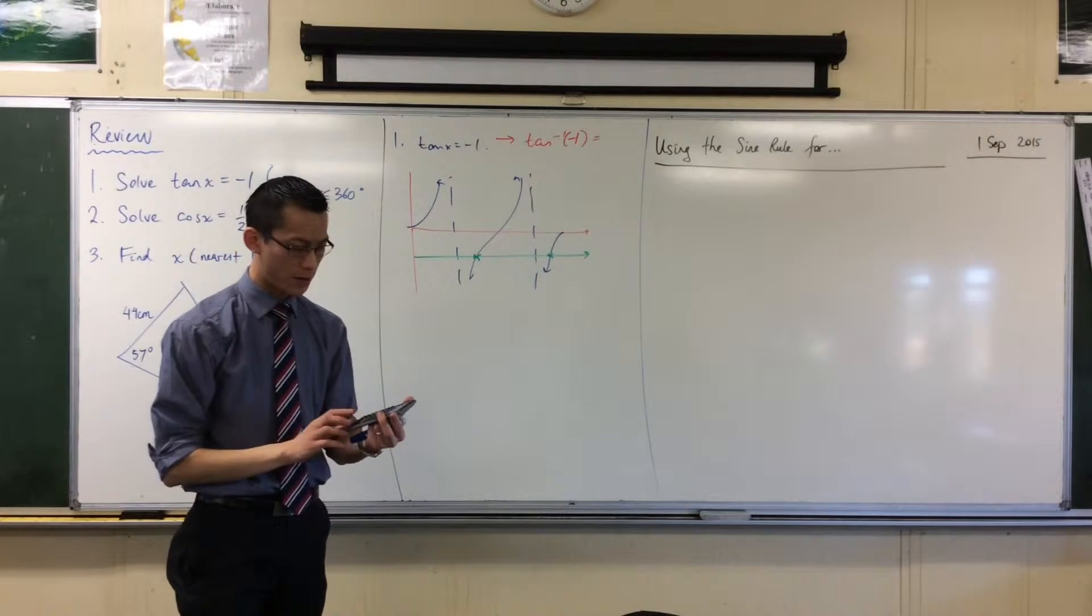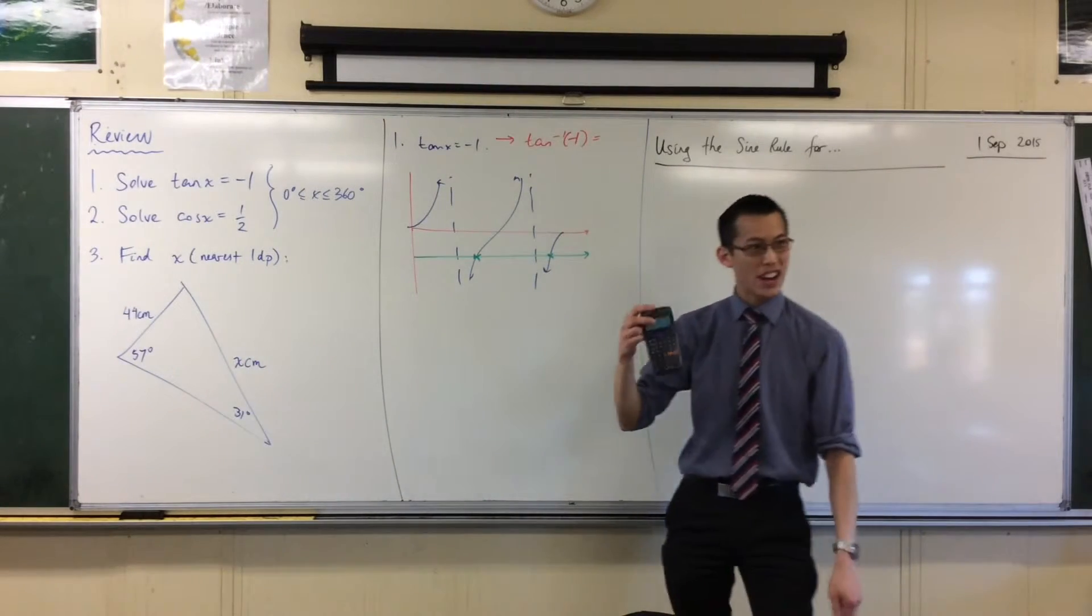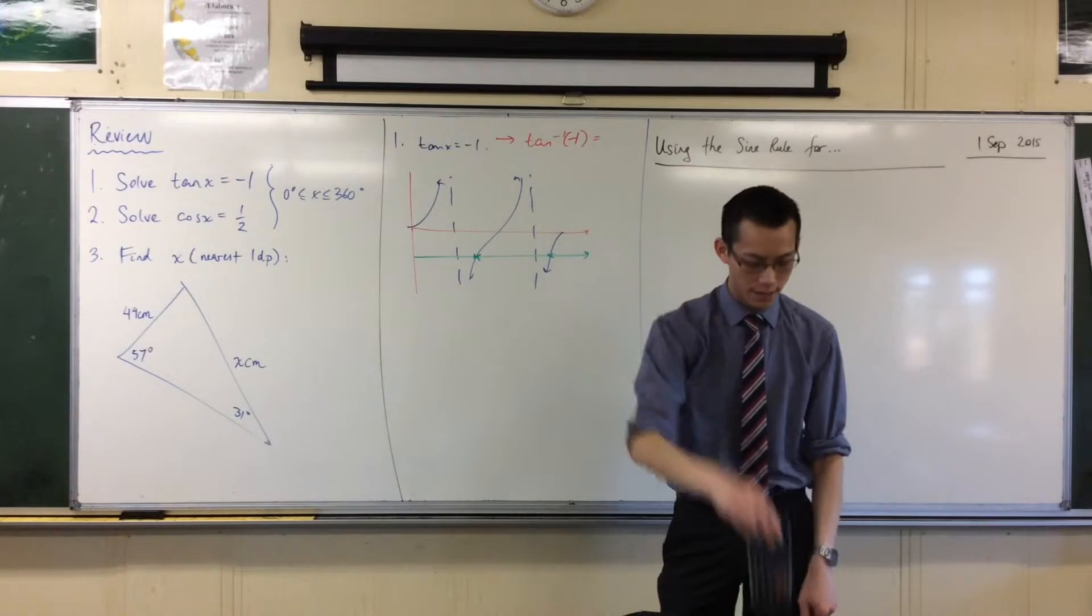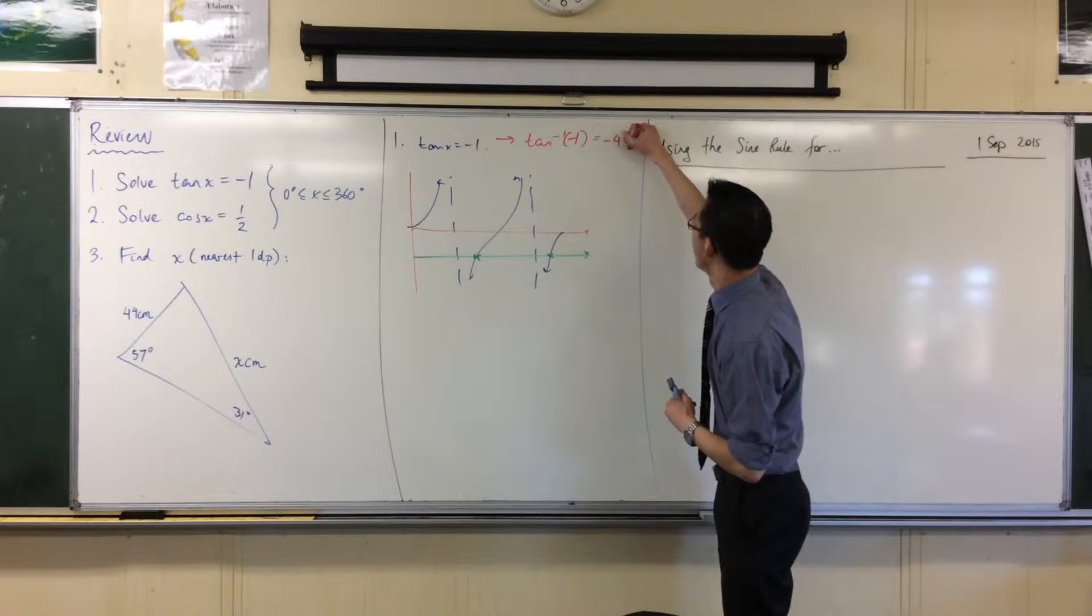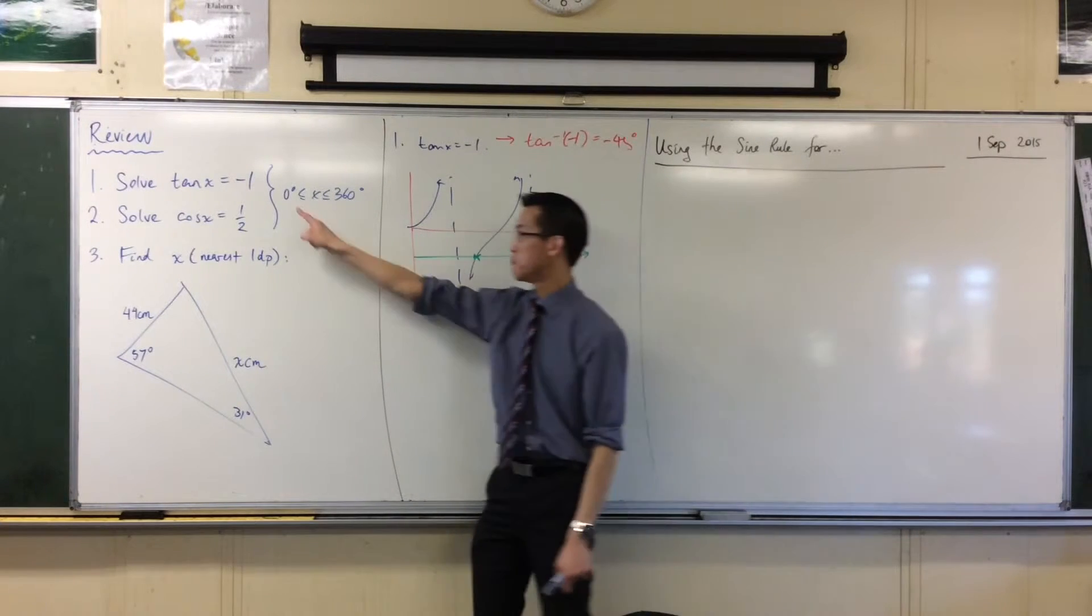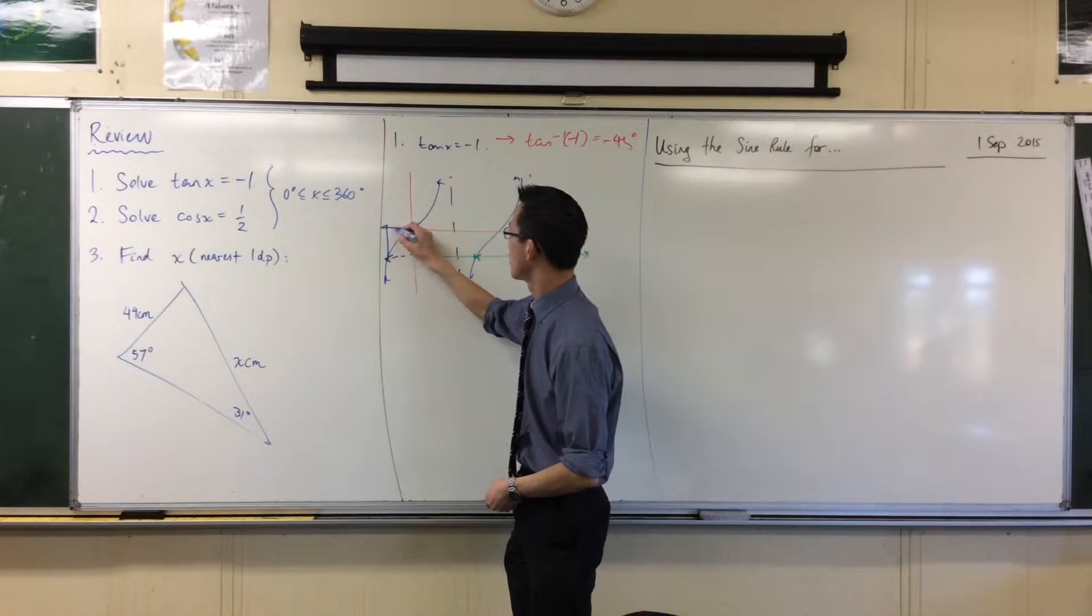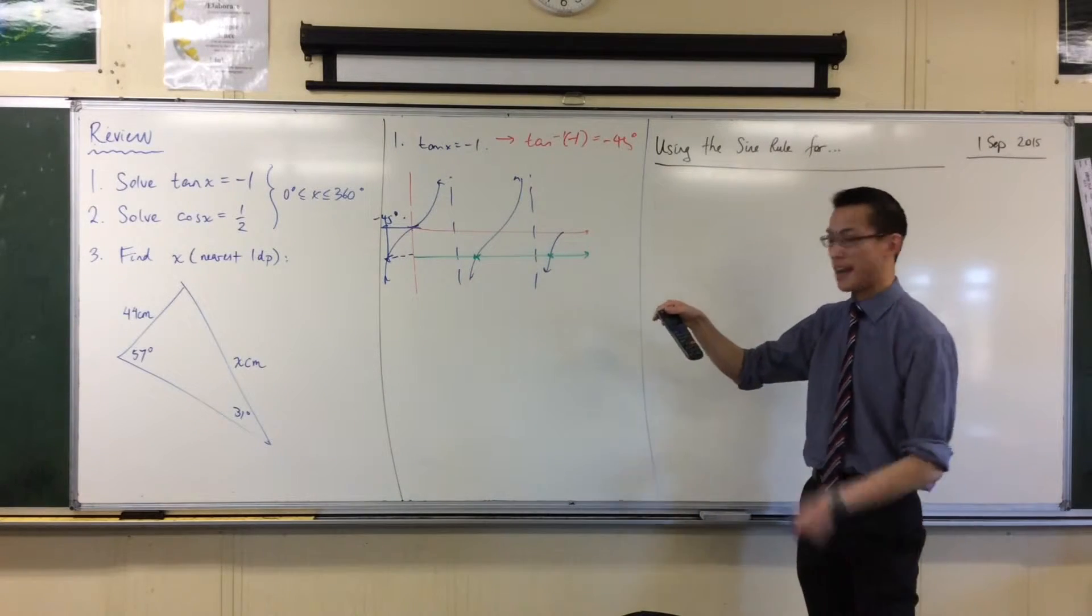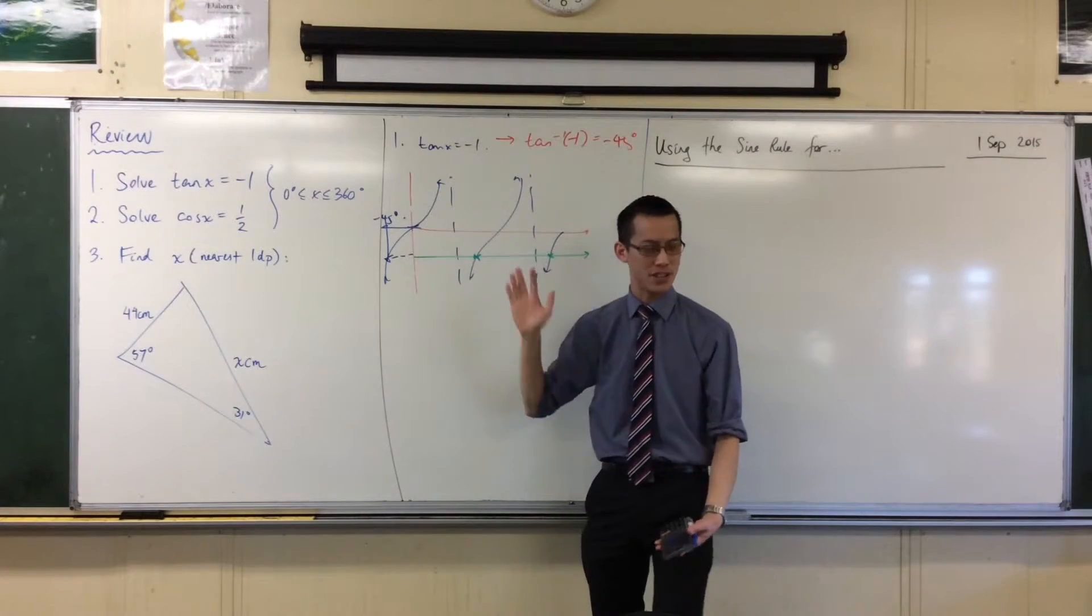So when you do tan inverse of negative one, interestingly, it gives you negative 45. Negative 45? When we were doing sine and cos before, whenever you did sine inverse or cos inverse, it would give you some positive angle, but this one's giving me a negative. Why is it doing that? Where is negative 45? Well, on my diagram, I haven't actually drawn it. This is 0 to 360. Negative 45 would be over here. Negative 45 degrees. And this is an answer. If I put in tan and negative 45, I'll get negative one. But it's not an answer in this range that I'm interested in, in this domain, I should say.